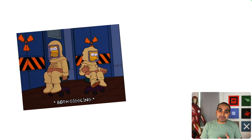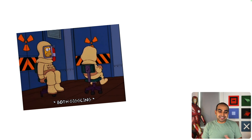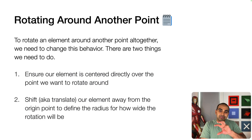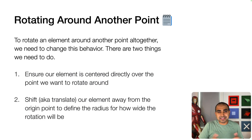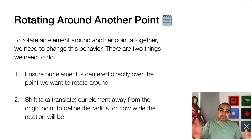The only thing that changes is the position of the transform origin — the point used as the origin for all calculations. The default effect is very similar to spinning on a chair. But what we're trying to do is not just rotate an element at its own center point, which is easy and we've done many times. Instead, we want to rotate an item around a different point to create a windmill-like effect where it rotates around a center area.